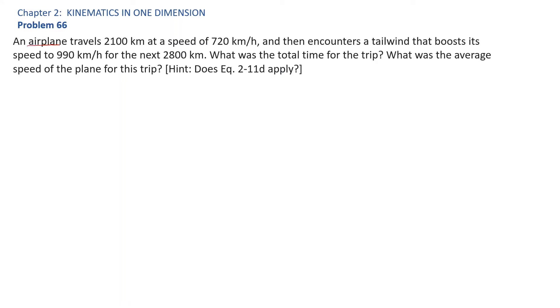We have an airplane that is traveling at a speed of 720 km per hour for 2100 km, and then there is a tailwind that increases the speed of the plane to 990 km per hour for the next 2800 km. We are asked to find the total time for the trip and also the average speed.